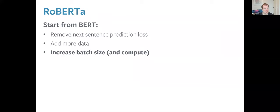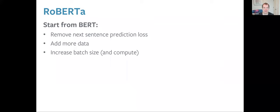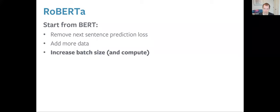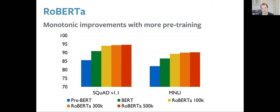Our work called RoBERTa took BERT and removed the next sentence prediction loss, which didn't actually help, and just scaled up the amount of data and compute. We found this just kept getting better — the longer we trained, the better the model got. Scaling up seems extremely effective. We can see: pre-BERT state of the art, a big chunk gained from BERT, and then RoBERTa's technique of scaling up just keeps monotonically improving results.